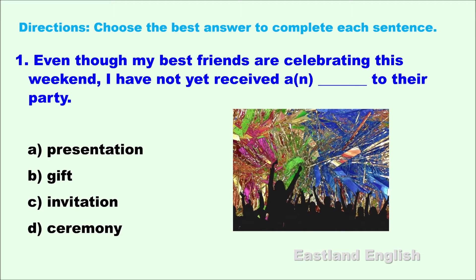Before we begin to look at the answers, let's look carefully at some of the words in the sentence. Celebrating equals partying. Received is used as a past participle in the present perfect tense — it means gotten or got. In British English the past participle for get is got; in American English they use gotten. Although the root word in A may relate to a party, when you add the suffix -tion, presentation means something very different — a public speech. A is incorrect.